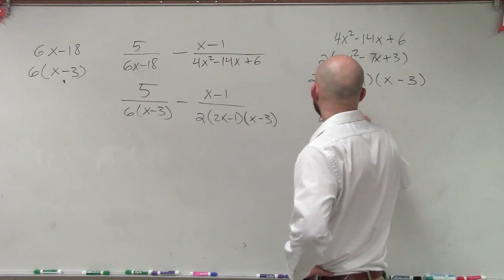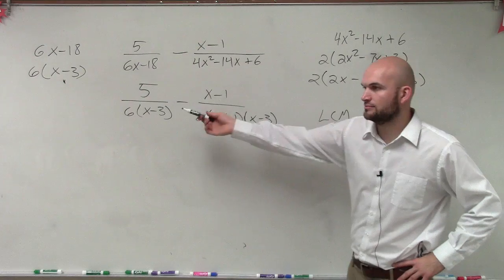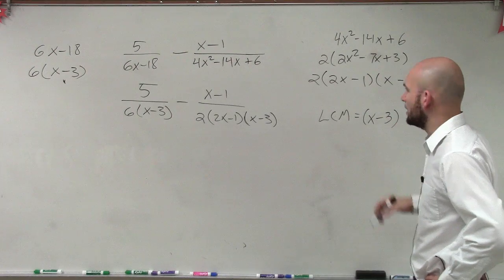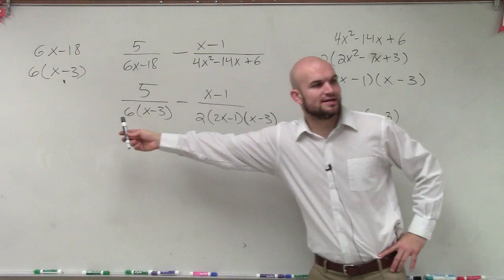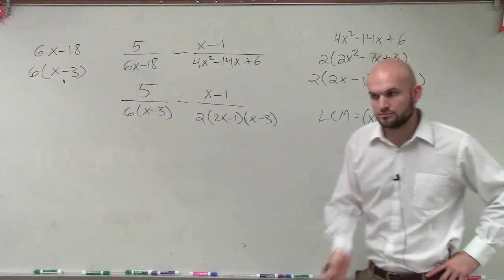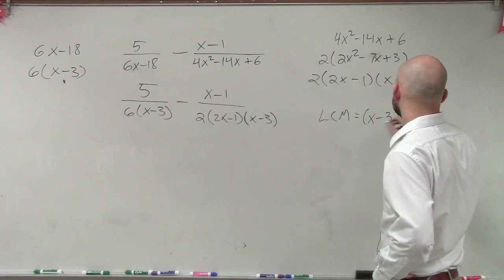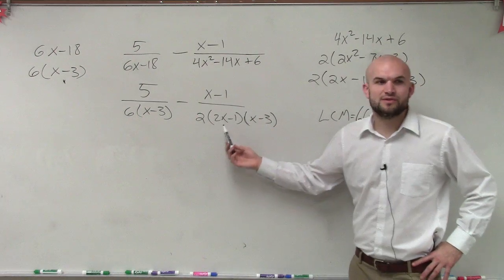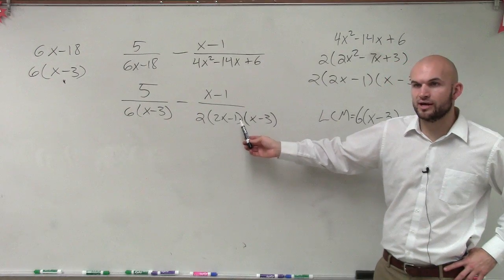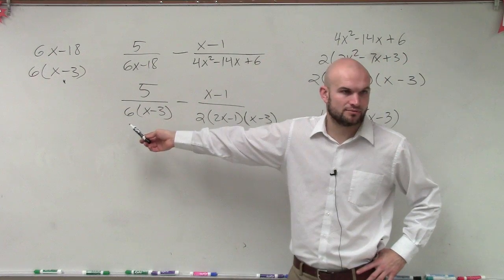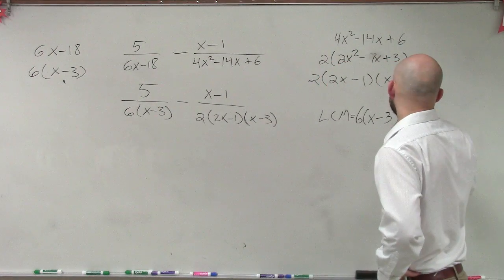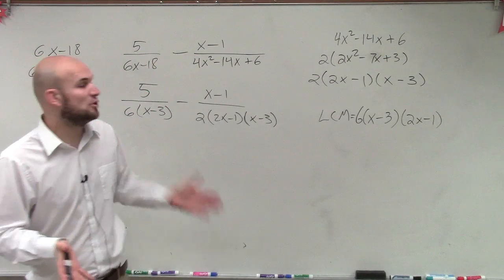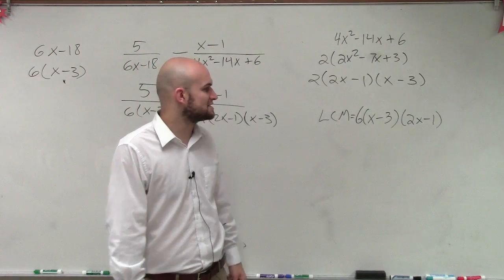And as you guys can see, now what we want to do is start writing out our LCM, least common multiple for our denominator. So what do they share? They both share x minus 3. But what about the numbers? What is the largest number that both 6 and 2 divide into? 6. Then what else do they have that maybe they share or they don't share? Well, 2x minus 1. So what do I need to multiply over here to get it to be 2x minus 1? 2x minus 1. So the LCM is 6 times x minus 3 times 2x minus 1.